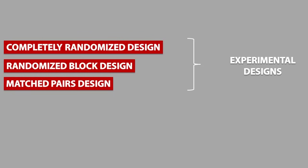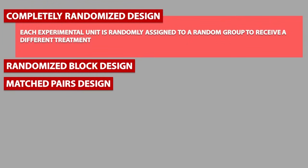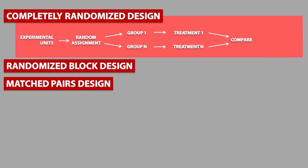Let's quickly recap the experimental designs we talked about. In a completely randomized design, each experimental unit is randomly assigned to a random group to receive a different treatment. This is what the diagram would look like. Group N or Treatment N means you can have any number of groups or treatments.